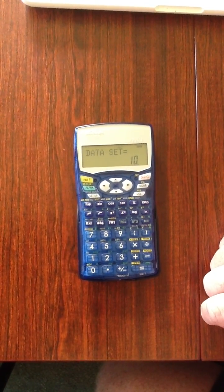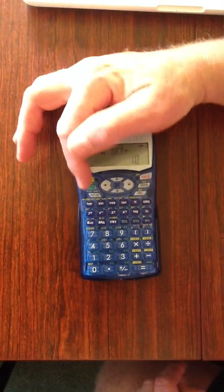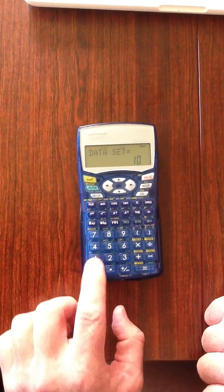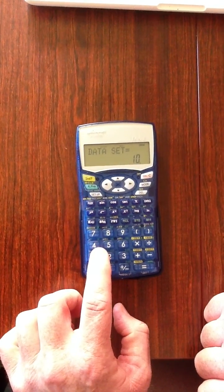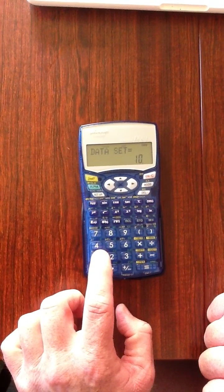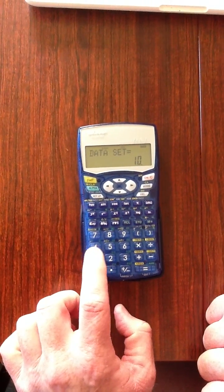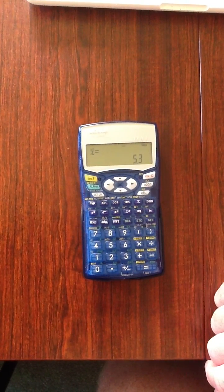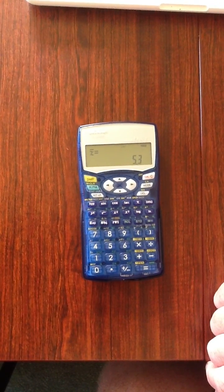To calculate the mean, it's quite simple. We press alpha and then we press 4. We're looking for the x with the bar above it. That's called x bar. That stands for the mean. So we press that and then equals and we can see our mean is 5.3.